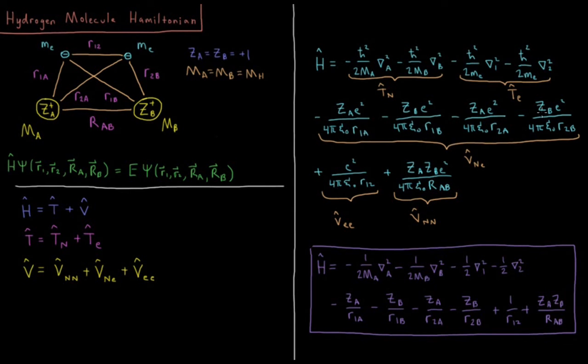And minus ZB E squared over 4 pi epsilon 0 R2B. Those are our nuclear electron attraction terms. We have our electron-electron repulsion terms, same sign, repulsive potential energy, positive potential, plus E squared over 4 pi epsilon 0 R12. And nuclear-nuclear repulsion terms, ZA times ZB E squared over 4 pi epsilon 0 RAB.